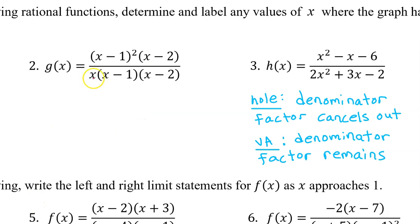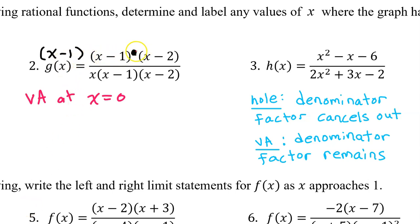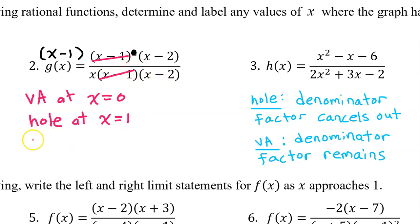For number 2, the factor of x in the denominator does not cancel out with anything, so we have a vertical asymptote at x equals 0. The x minus 1 cancels out with one of the factors of x minus 1 in the numerator — even though x minus 1 squared means x minus 1 times x minus 1, so there's an extra factor left in the numerator, it's still a hole at x equals 1. Similarly, we have a hole at x equals 2 because that factor cancels out.